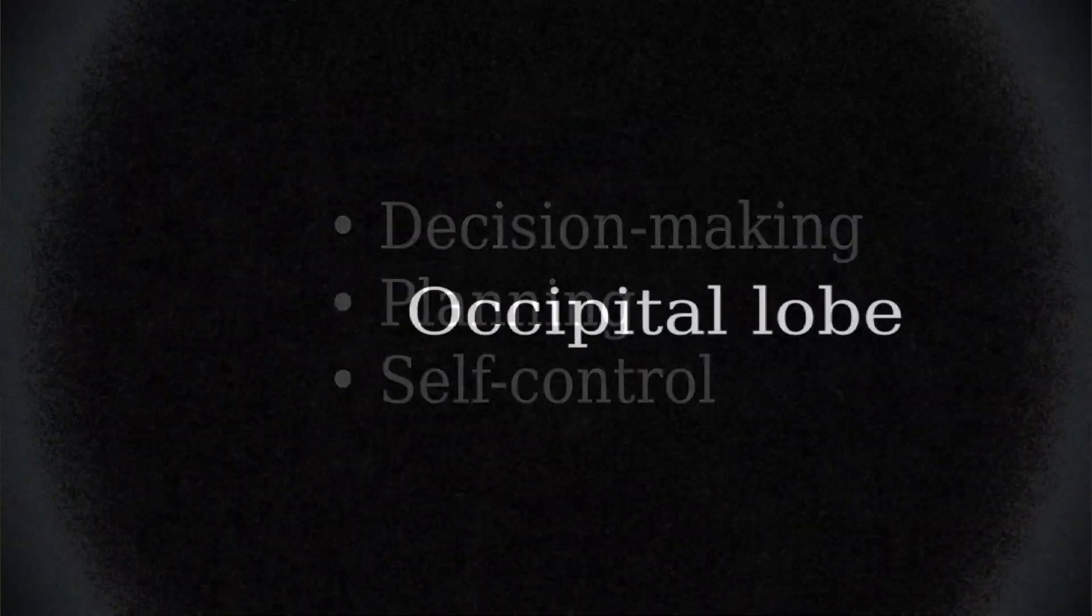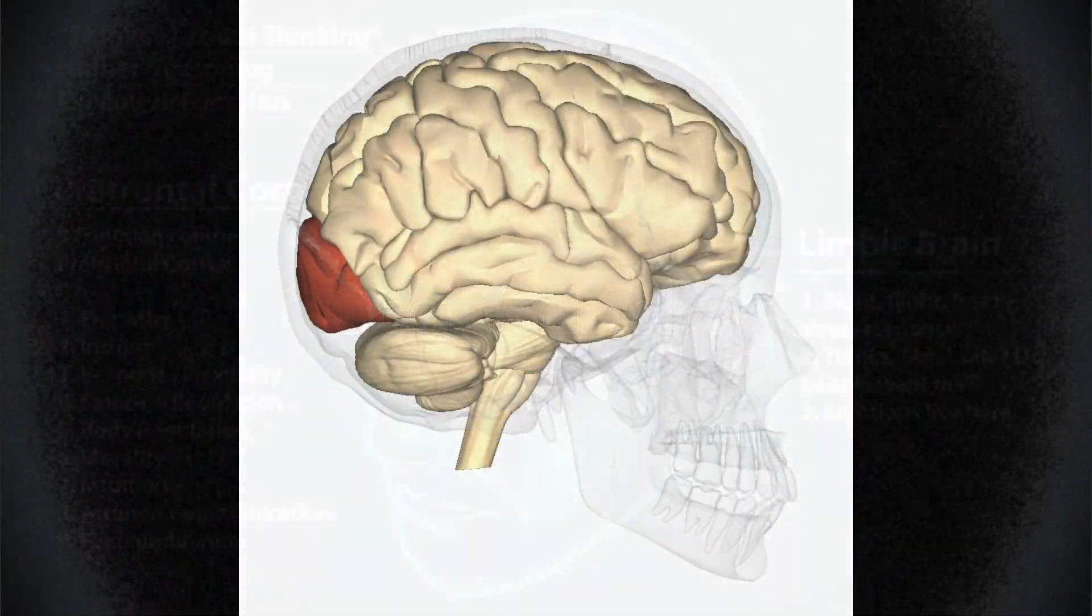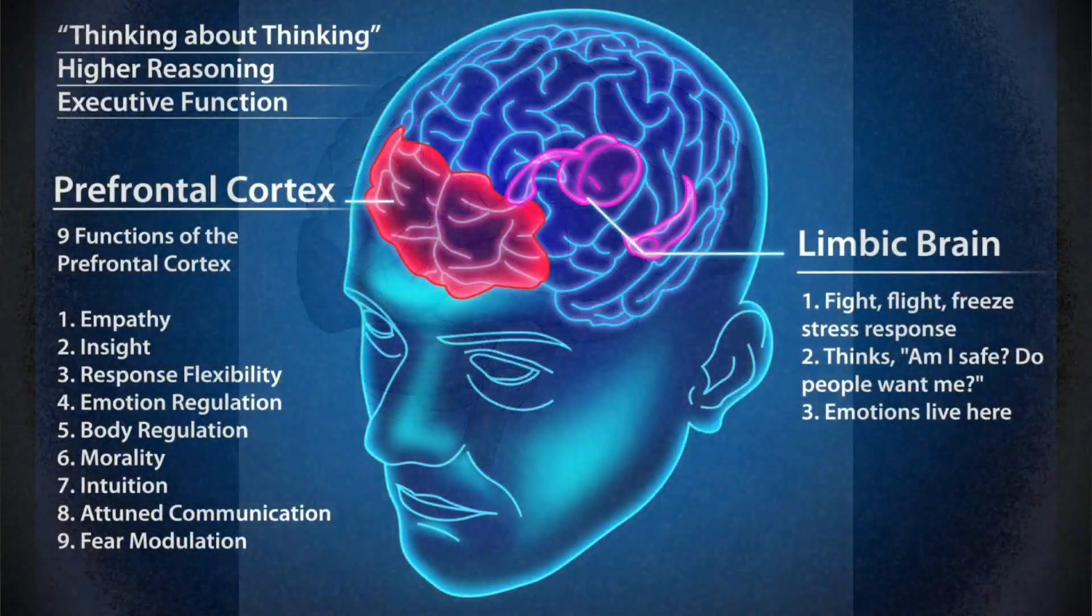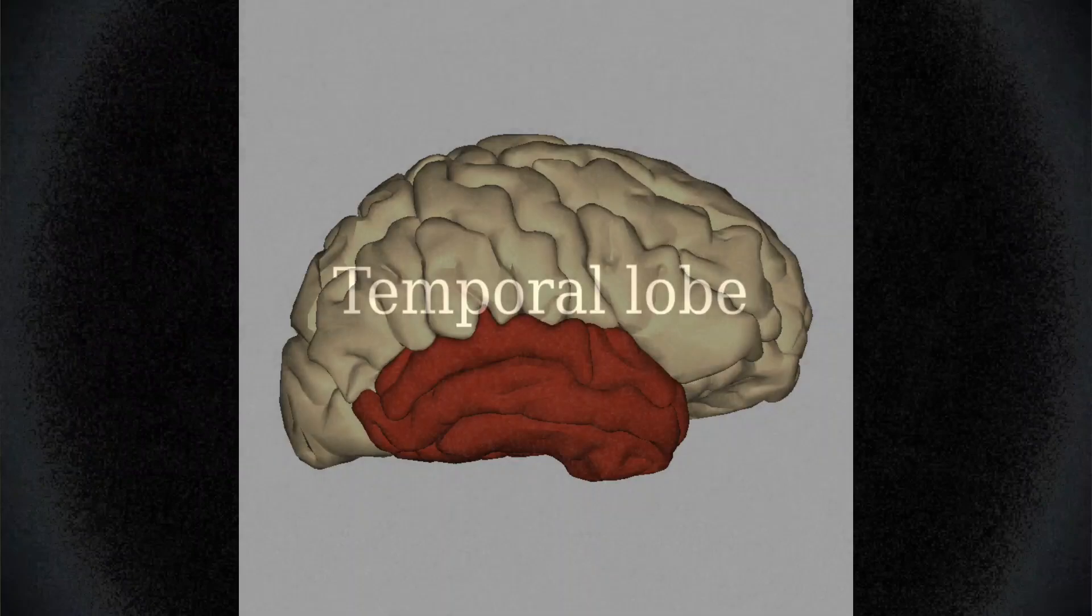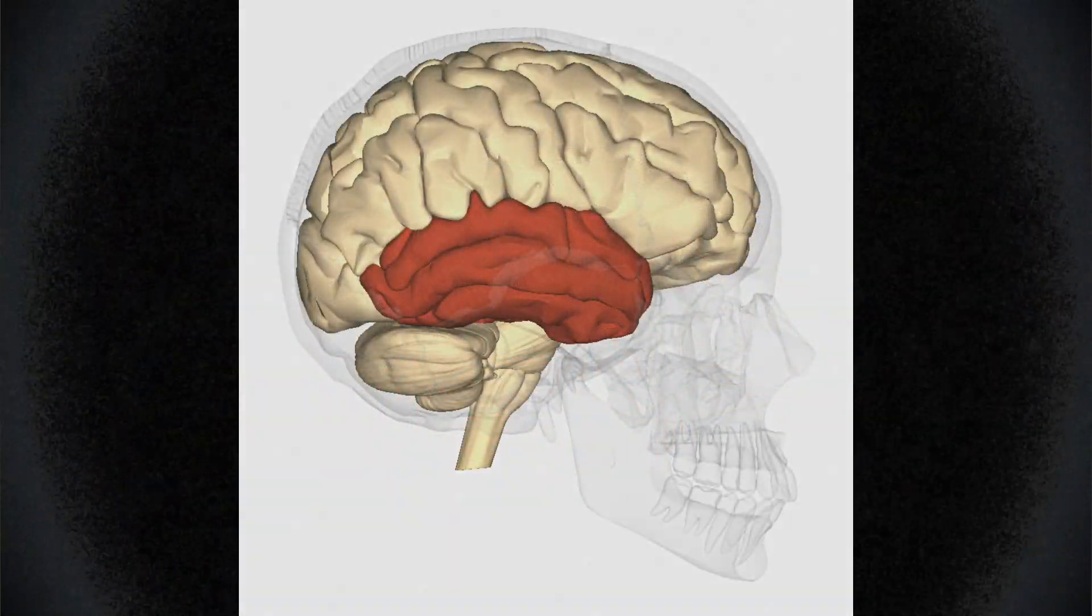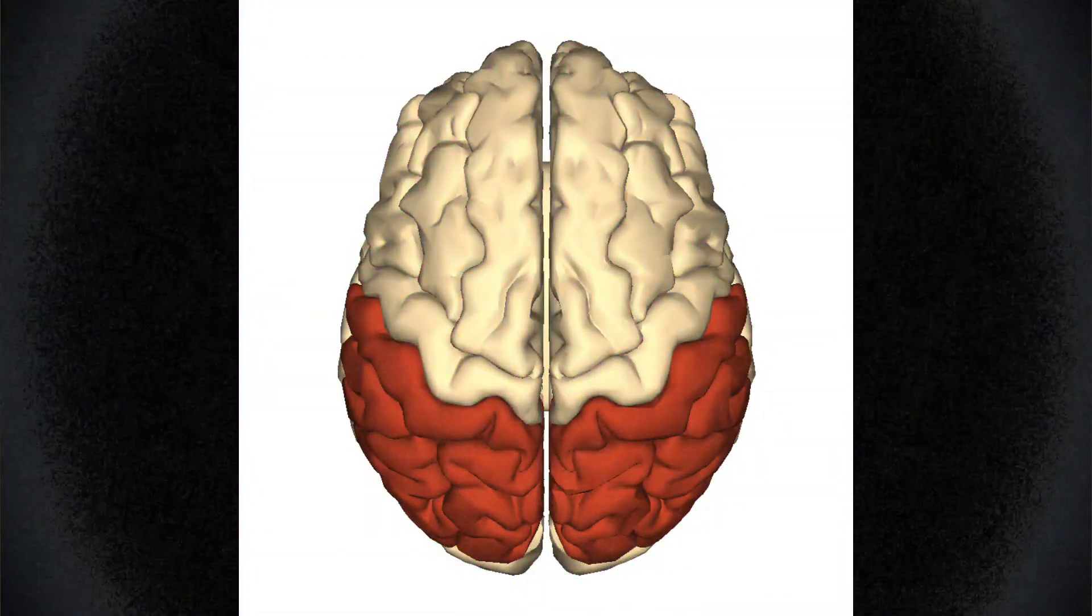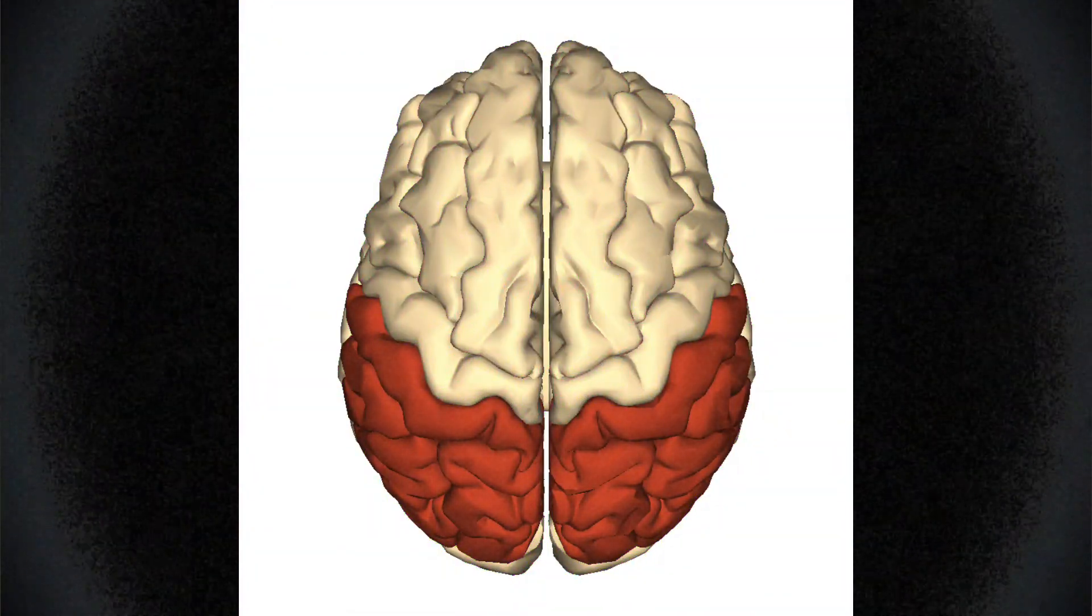The occipital lobe, situated at the back of the brain, is primarily involved in processing visual information. Meanwhile, the temporal lobe is responsible for auditory processing and memory formation, while the parietal lobe integrates sensory information and helps us navigate spatial environments.